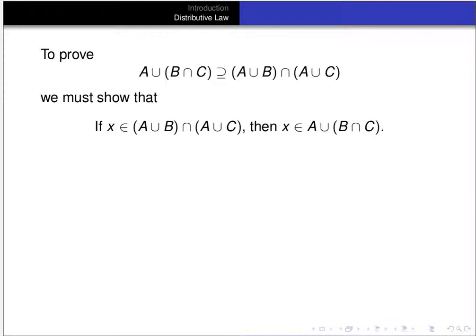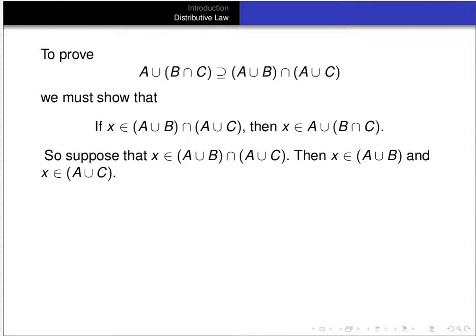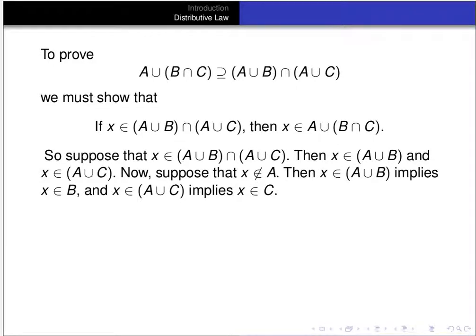Now we're going to prove the subset relation holds in the other direction — that (A∪B)∩(A∪C) is a subset of A∪(B∩C). We have to show that if x is in (A∪B)∩(A∪C), then x is in A∪(B∩C). Suppose x is in (A∪B)∩(A∪C), meaning x is in A∪B and in A∪C. Now suppose x is not in A. Then x in A∪B implies x is in B, and x in A∪C but not in A implies x is in C.